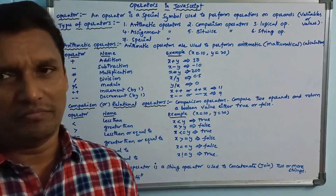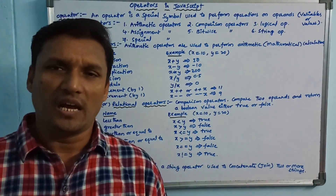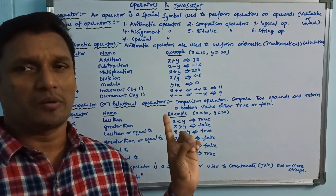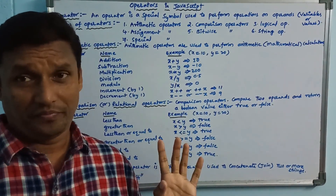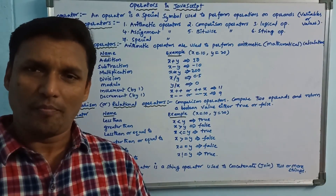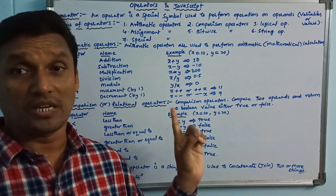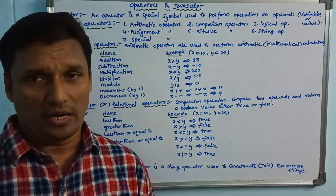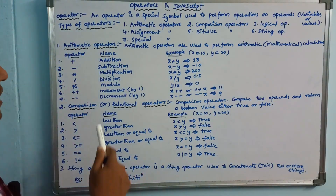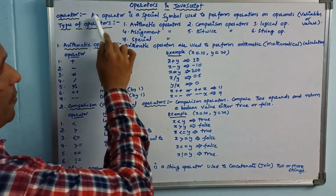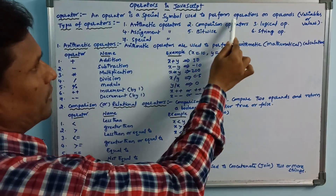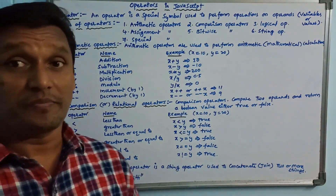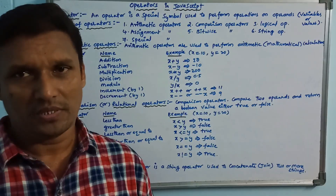What is an operator? There are types of operators in C language, and there are the same operators in JavaScript. First of all, what is an operator? An operator is a special symbol used to perform operations on operands. Operands means either variables or numbers.